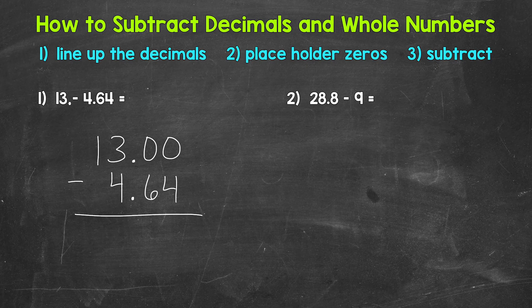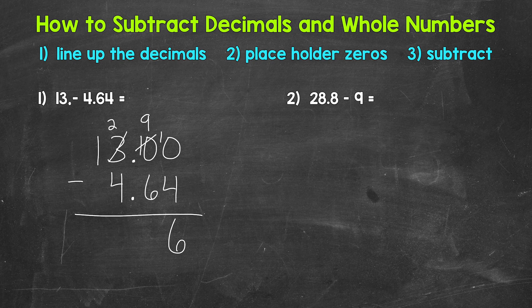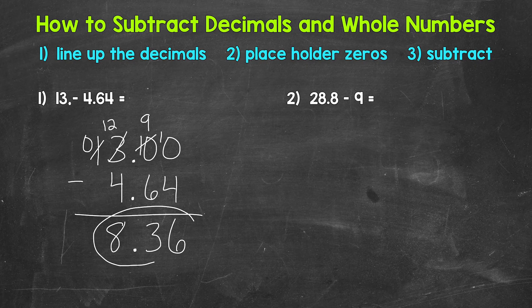Now we're ready to subtract. Starting with the hundredths place: 0 minus 4, so we need to borrow. We go all the way over to the 3 and borrow — this is now 2, then we have 10 here which becomes 9, and we get 10 minus 4, which gives us 6. Then 9 minus 6 gives us 3. We bring the decimal straight down into the answer — the decimal is lined up throughout the entire problem. Then 2 minus 4 requires borrowing from the 1, which is now 0, giving us 12 minus 4, which is 8. That's our final answer.